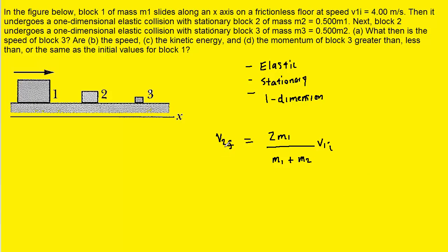In this equation, the final velocity of the second object is going to equal twice the mass of the first object divided by the total mass of the objects, times the initial velocity of that first object. So, for the collision between block 1 and block 2, we can use this equation to determine the final velocity of block 2. To do that, we'll go ahead and plug in the given values.